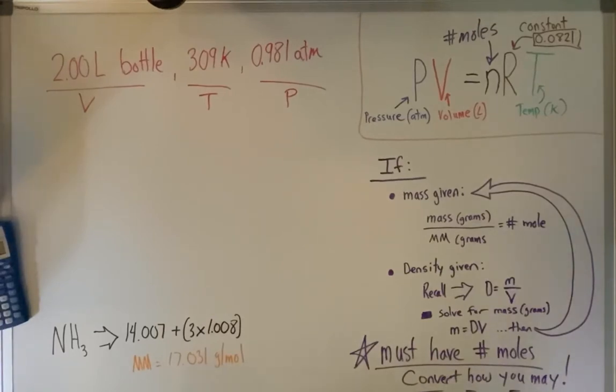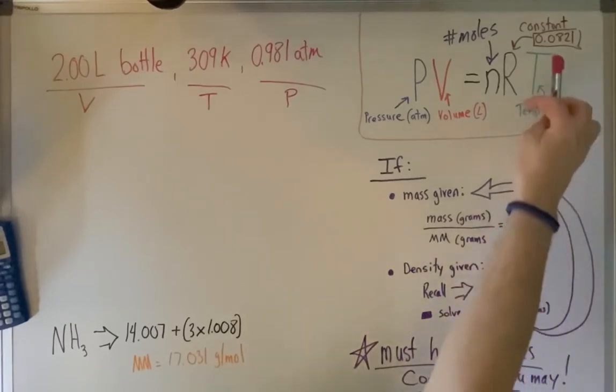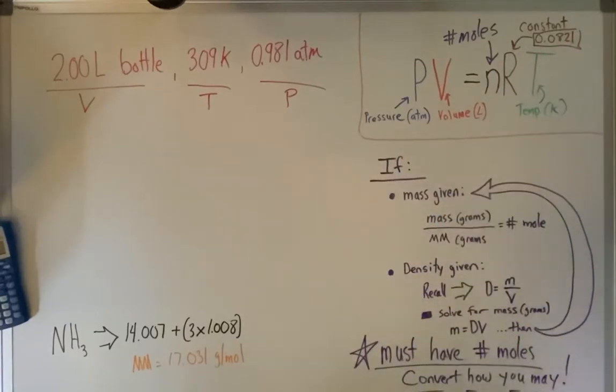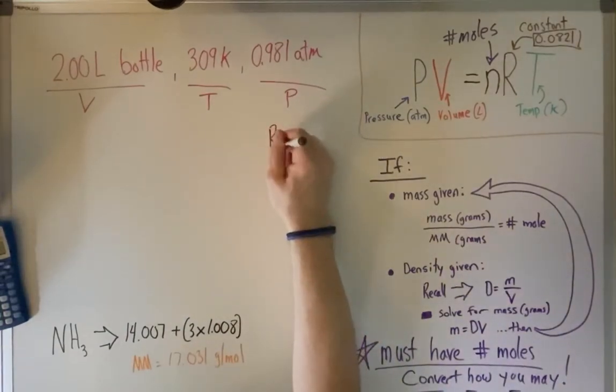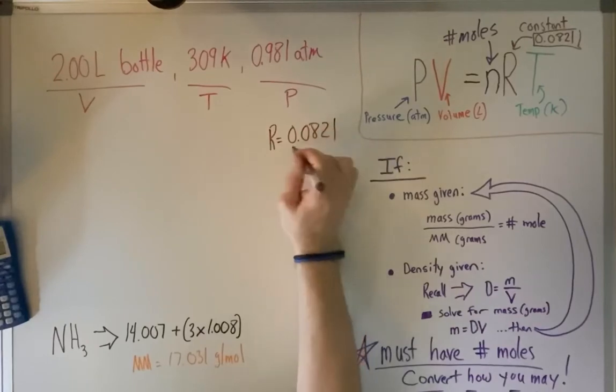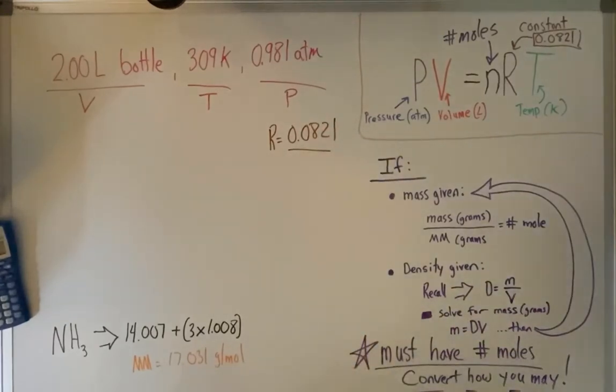Because we got it in liters, Kelvin, and atmospheres, we can use the constant, which all these must be in those units in order to use it. So we know where our constant is. The constant's going to be the R, which is equal to 0.0821. So we know we have that.